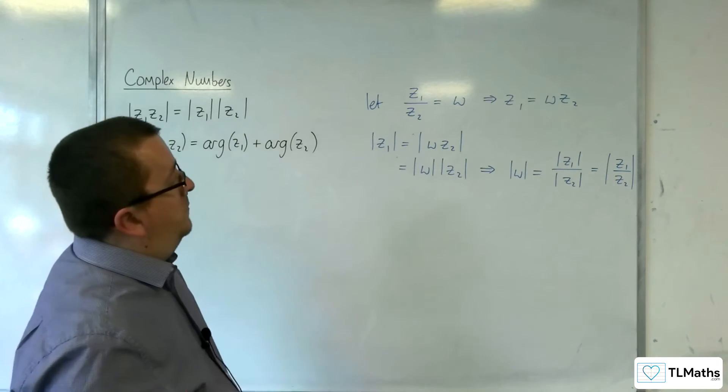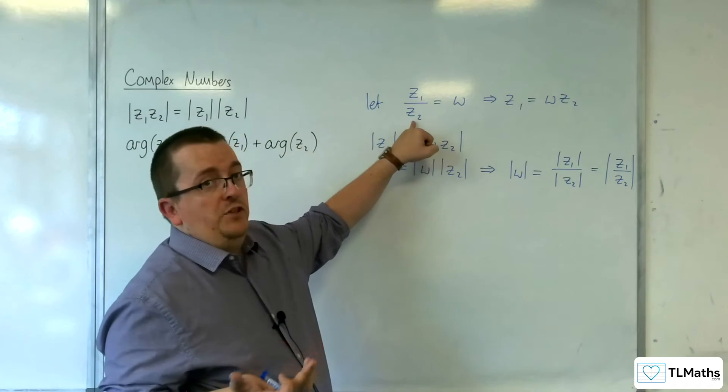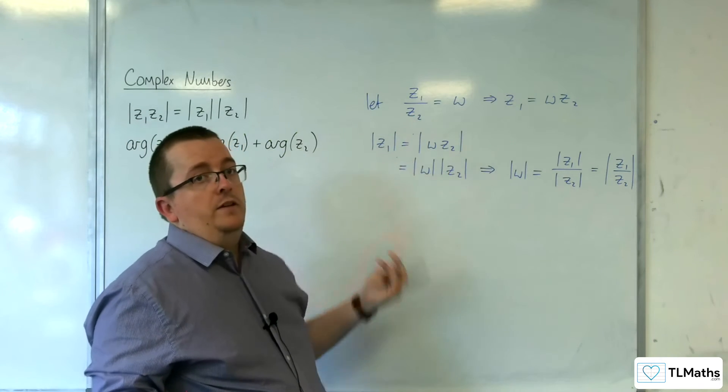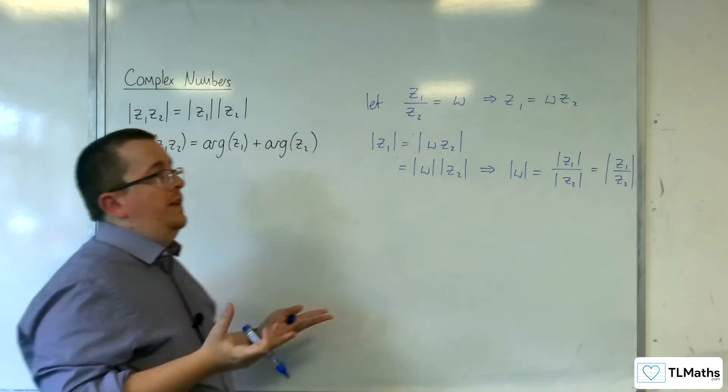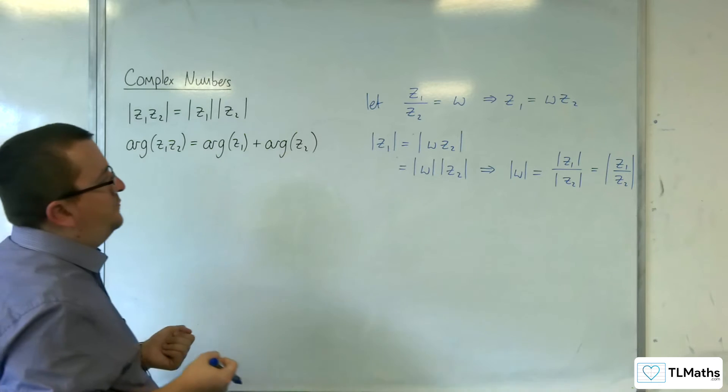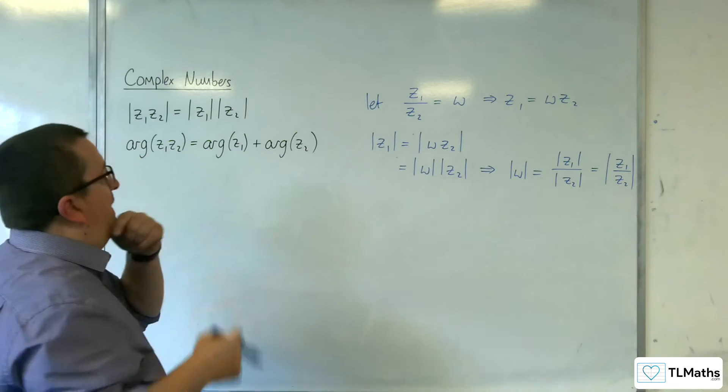So let's say the modulus of Z2 is 2, then you'd effectively be multiplying your vector by half. It would half the length of it. Now, what about the argument then?